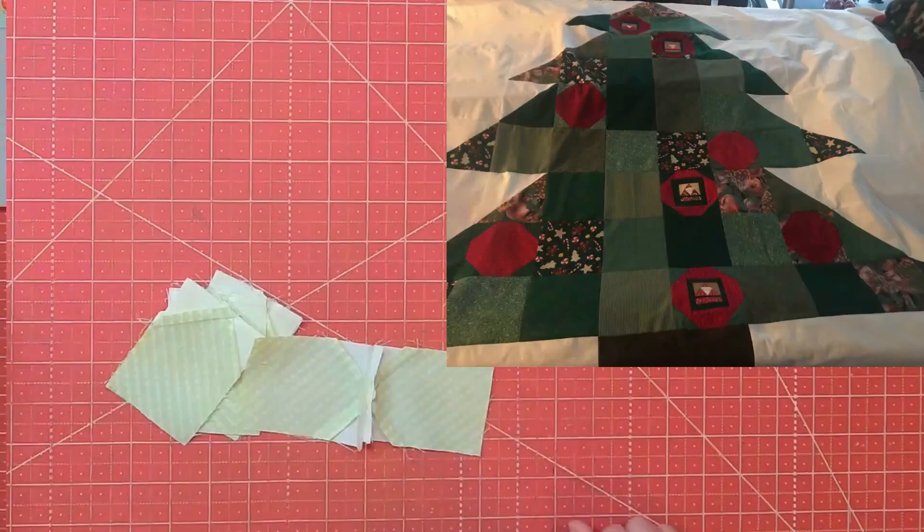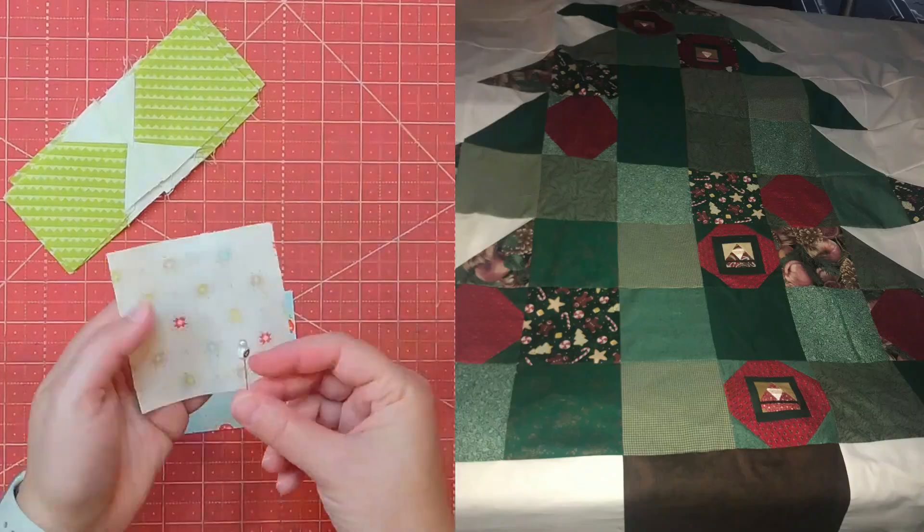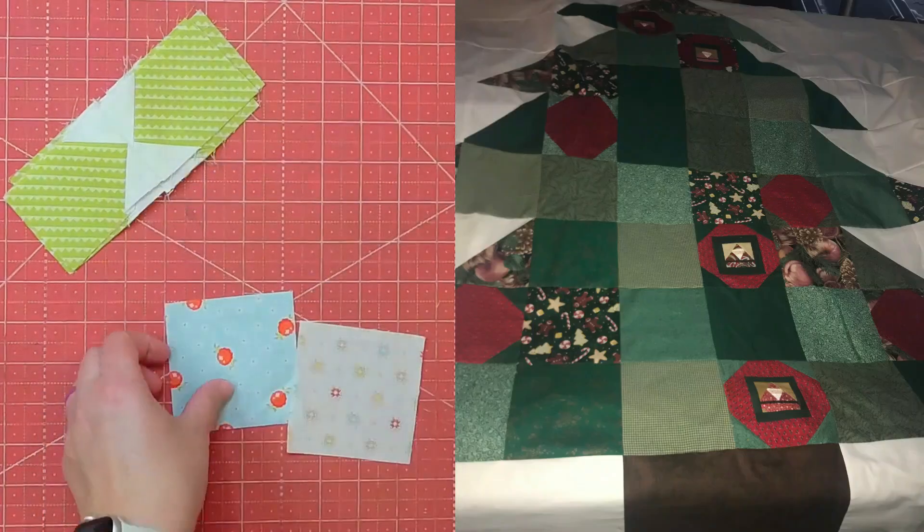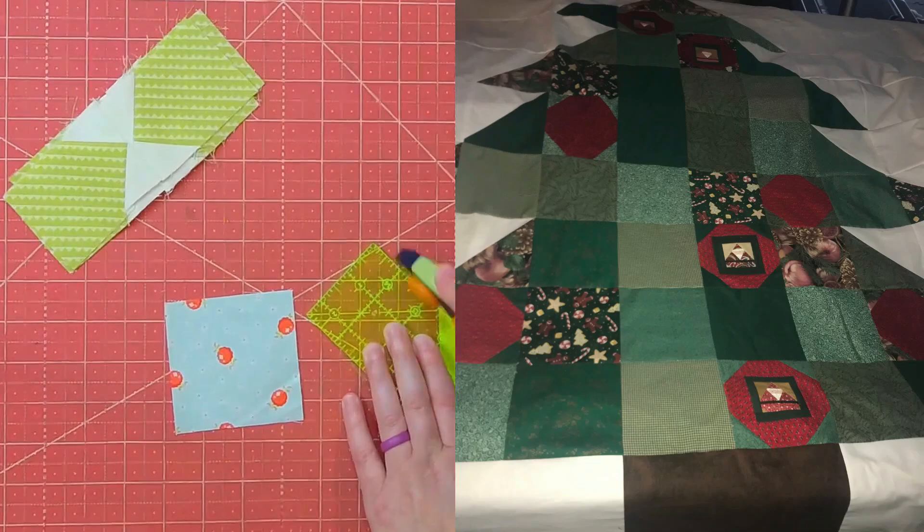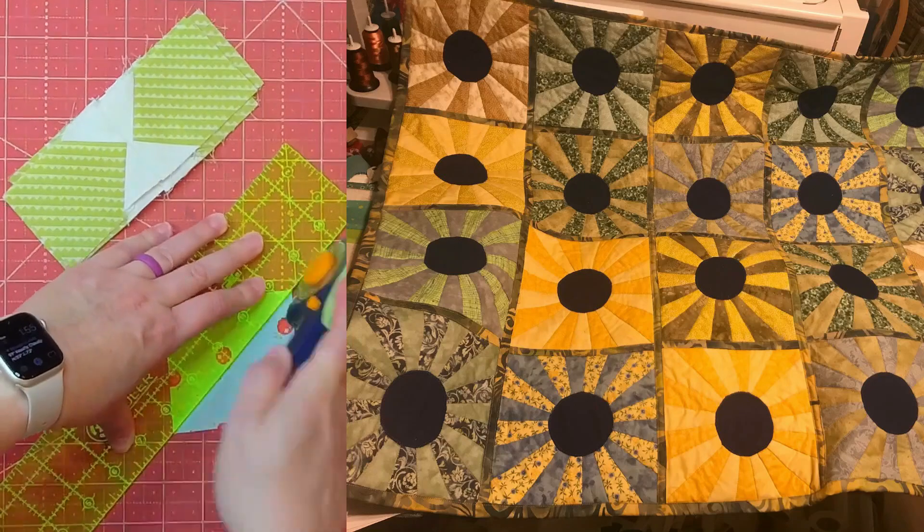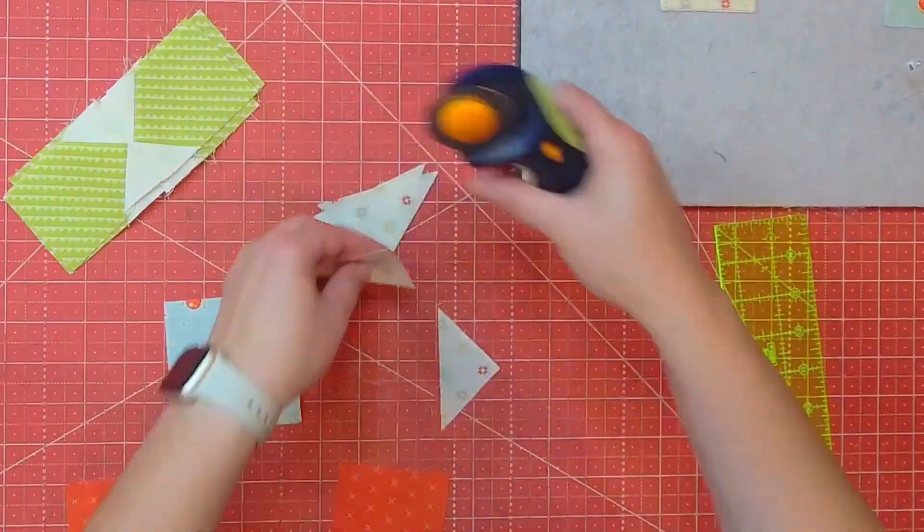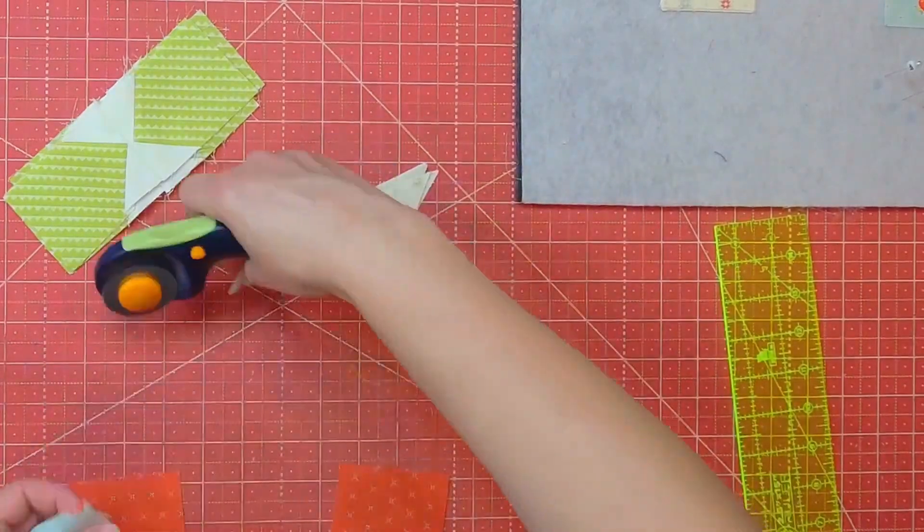The Christmas tree quilt has mom's Santa blocks in it and is made almost entirely from her fabric. The Missouri Star Quilt Company squared quilt is also made almost entirely from her fabrics. I keep finding items for sewing and some blocks. It's like she is giving me little gifts along the way when I need it most.